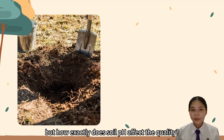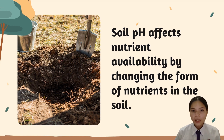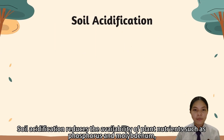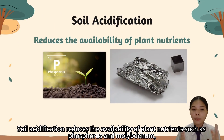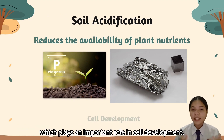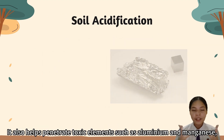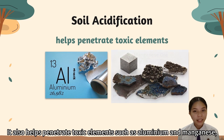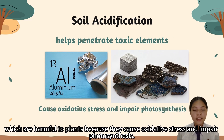But how exactly does soil pH affect quality? Soil pH affects the nutrient availability by changing the form of nutrients in the soil. Soil acidification reduces the availability of plant nutrients such as phosphorus and molybdenum, which play an important role in cell development. It also allows toxic elements such as aluminium and manganese to penetrate, which are harmful to plants as they cause oxidative stress and impair photosynthesis.